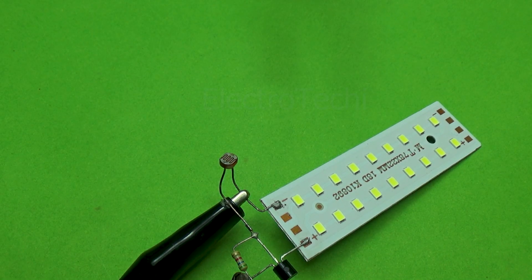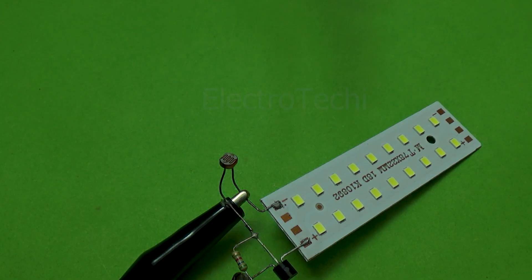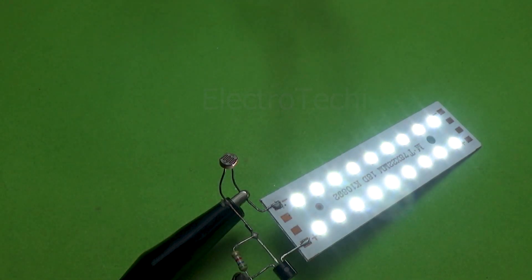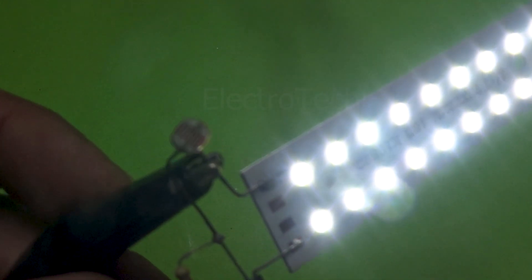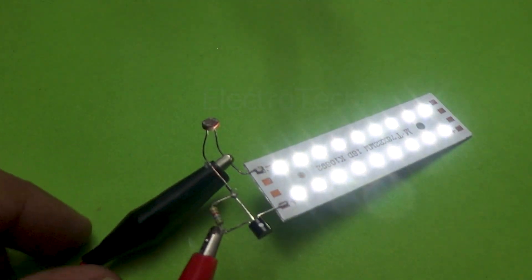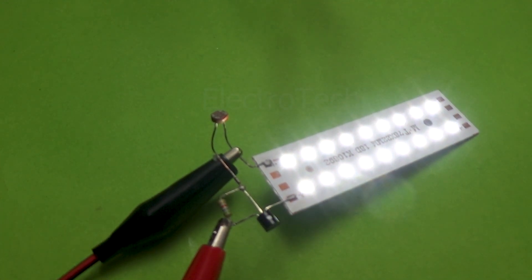After connecting all the components on your circuit board, power up the circuit. You'll notice that when the LDR is exposed to light, the LED remains off. Now, slowly cover the LDR with your hand. As the light decreases, the LED turns on automatically. That's your working dark sensor circuit in action.